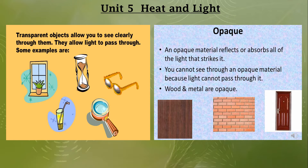Before we start today's written work, let's recall our previous lesson. Yesterday we learned about transparent objects — through which light can pass — and objects through which light cannot pass. Transparent objects allow you to see clearly through them and allow light to pass through them. For example, glass, air, and water are transparent objects.